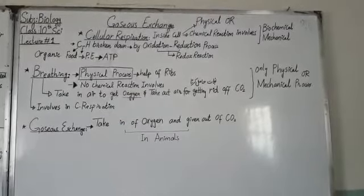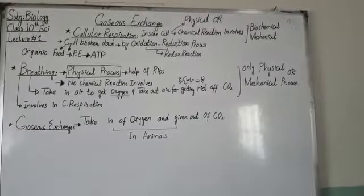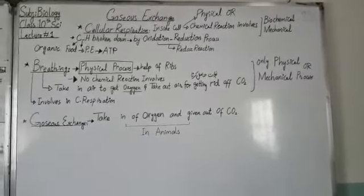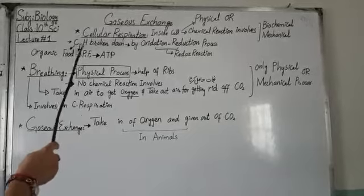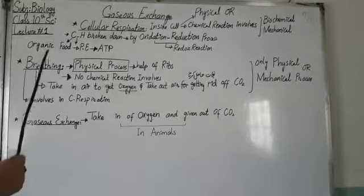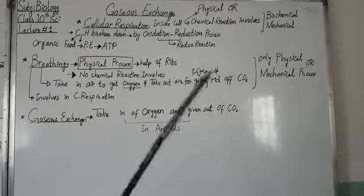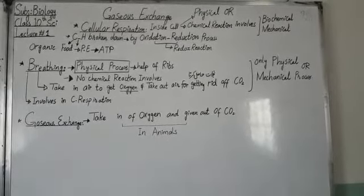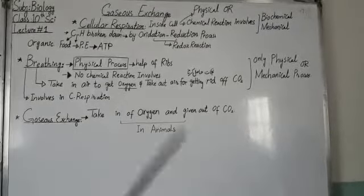Cellular respiration is a process in which carbon-hydrogen bonds are broken by oxidation-reduction reaction, and the energy is transformed into ATP. Carbon-hydrogen bonds refer to our organic food — food which contains carbon and hydrogen bonds that are broken down by oxidation. So the components of glucose have carbon-hydrogen bonds.